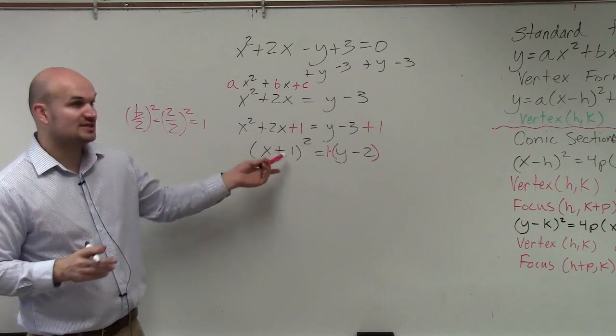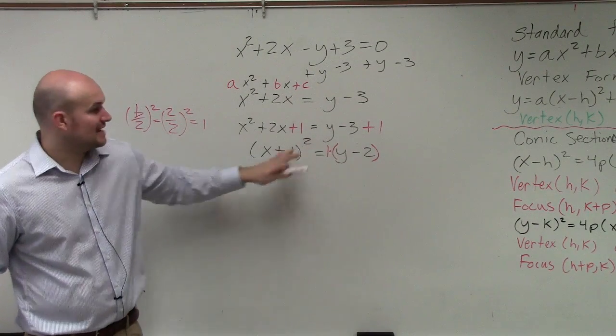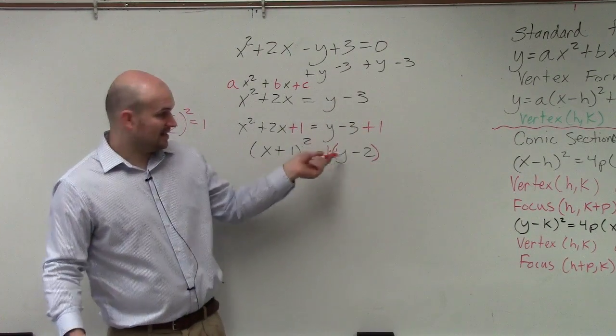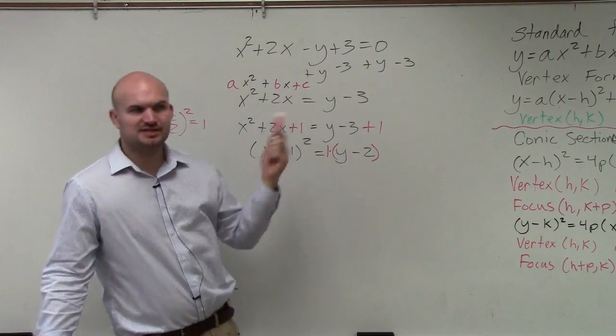That's going to be helpful because vertex is h comma k, right? So now, do you guys see how now this is in that format? So now that I put parentheses, I put a 1 in front of there, now I can just figure everything out.